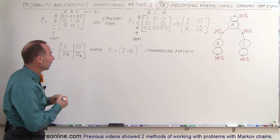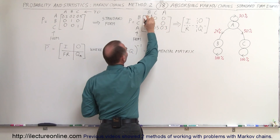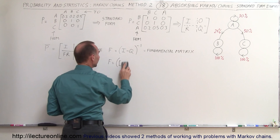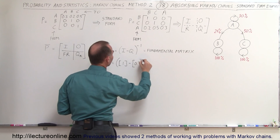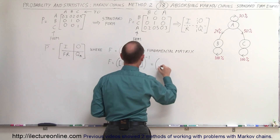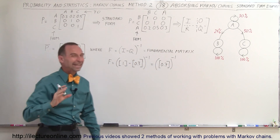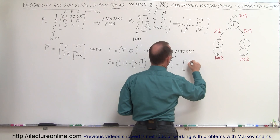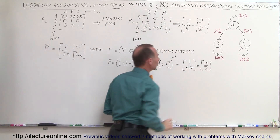Let's compute F. Since Q is just a 1×1 matrix, we need a 1×1 identity matrix. So F equals the inverse of (I minus Q), which is the inverse of (1 minus 0.3). That gives us the inverse of 0.7. The inverse of a 1×1 matrix is just 1 over that value, so F equals 1/0.7, which we can write as 10/7.